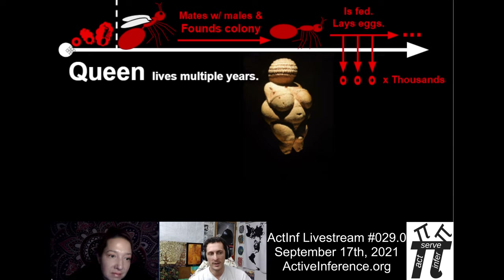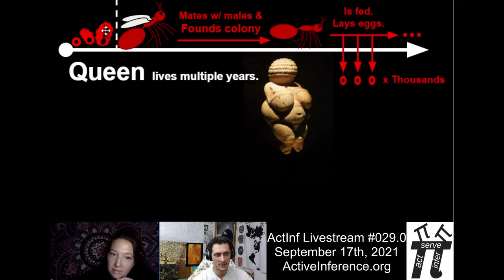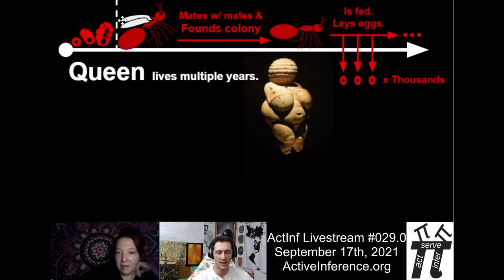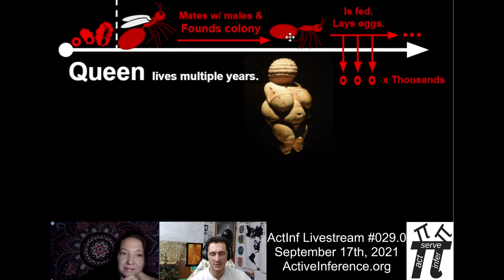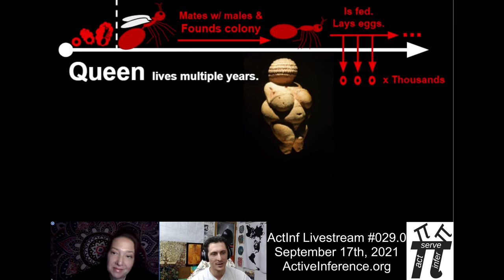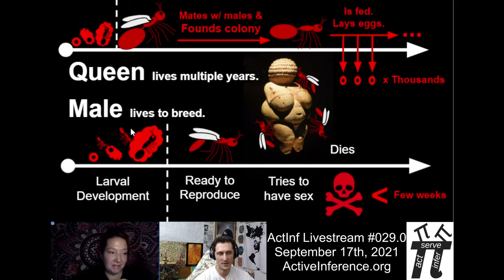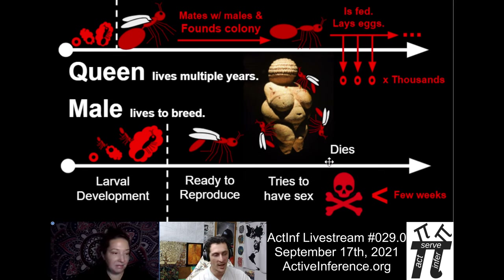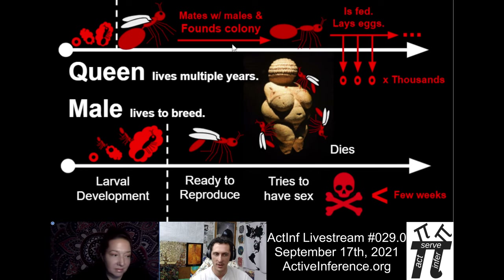The life cycle of an individual queen: she is born as an egg and develops into a winged fertile form called a gyne, like a princess. She will mate with males and found a colony, though there are other lifestyles — some queens don't found colonies by themselves but break off with some workers. There's a lot of diversity in ant life cycles. Once the queen is installed in the colony, she pretty much just gets fed and lays eggs — dozens to thousands or millions, depending on the species. The male is the other sexual type. The male lives to breed, has a larval development tended to by nurses, and then tries to mate — sometimes succeeds, and then dies. The adult phase is very short.